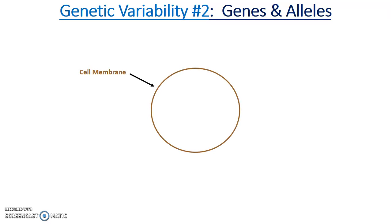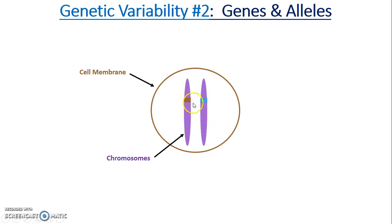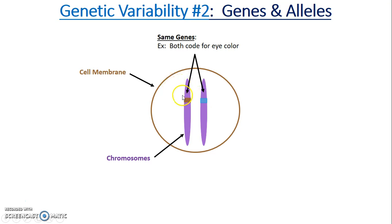With genes and alleles — here is our cell with its cell membrane. Inside the cell we find chromosomes. The chromosomes are shown a little fatter here so we can see these two alleles. Notice they are located on the same part of the chromosome, and this gene will code for eye color.